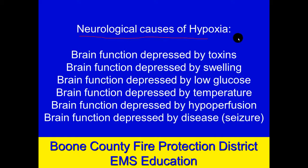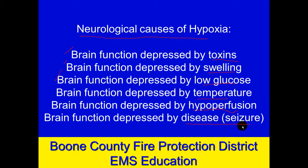The neurological system is in command of this whole thing, doing command and control for both respiratory and cardiovascular. So we have to investigate neurological causes of hypoxia — all of them related to the brain not functioning, maybe from alcohol or drugs, or increased pressure in the skull, or low glucose, or high or low temperature. Maybe the brain's not perfused, or there's a disease process like seizures or a stroke.